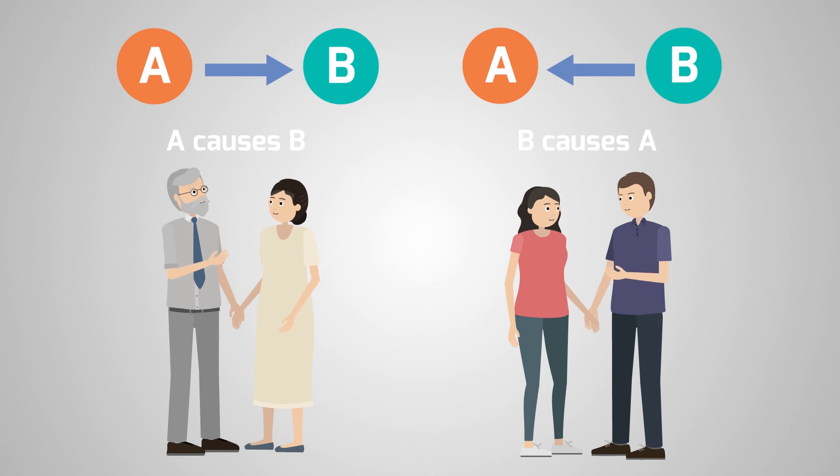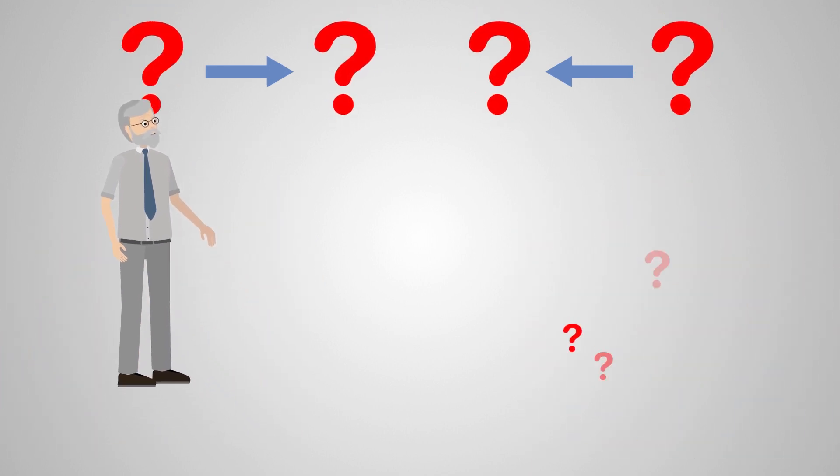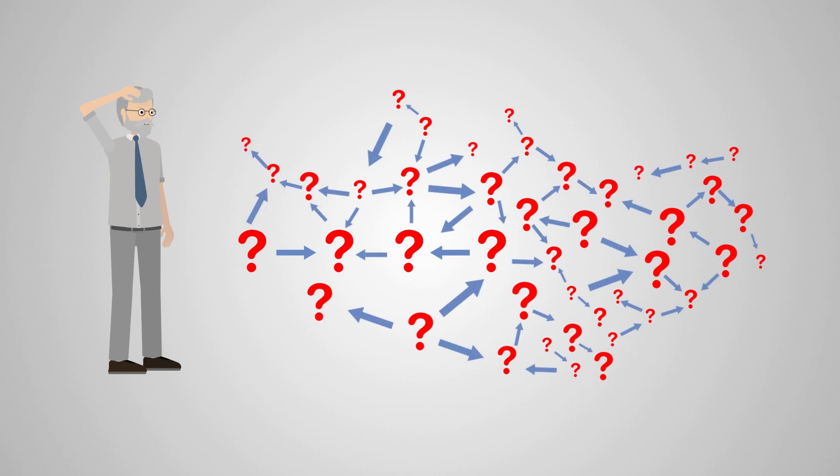Are married individuals happier than unmarried ones because they are married, or are happy individuals more attractive marriage partners? We would never be able to tell. And if you're not able to tell in the simplest possible system, then how is it possible in larger systems?